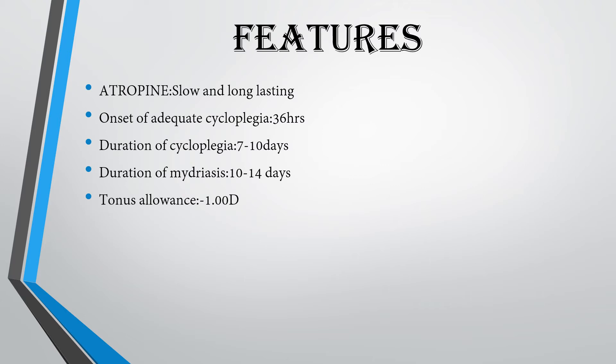The tonic allowance of Atropine is minus 1 diopter. For those who do not know, tonic allowance is the cycloplegic effect of any drug on a person's refractive error. In the case of Atropine, it is minus 1 diopter.